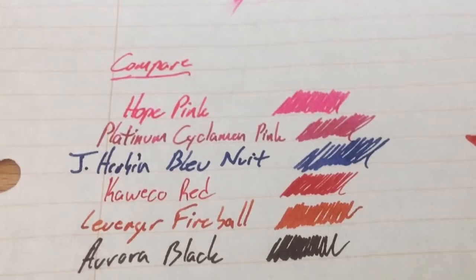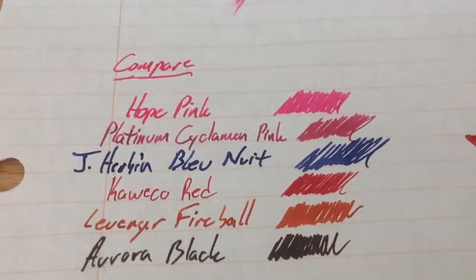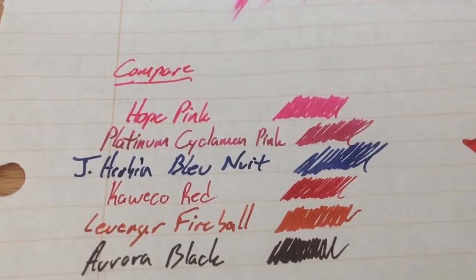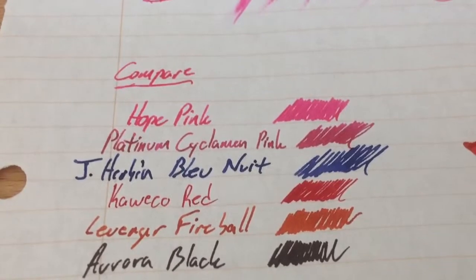Compared to some other pinks I had laying around, well, really one other pink that I had laying around, this Platinum Pink. The Platinum Pink is much darker. I'll have a review up for that soon. Compared to some blues and reds and that sort of thing, you can see the brightness of this Hope Pink. So check out Hope Pink. It's a really nice color.